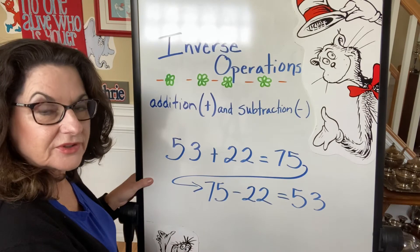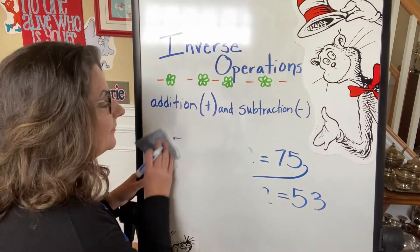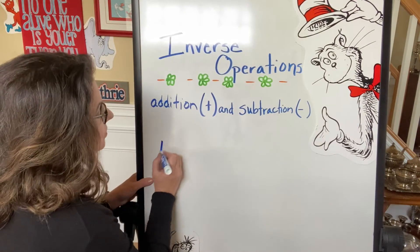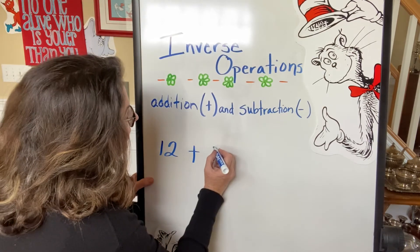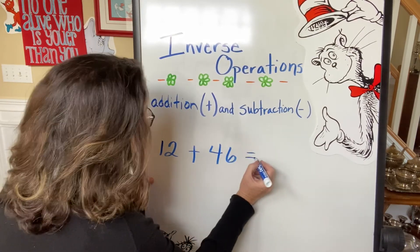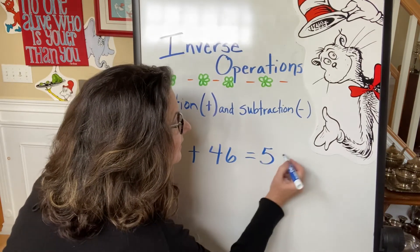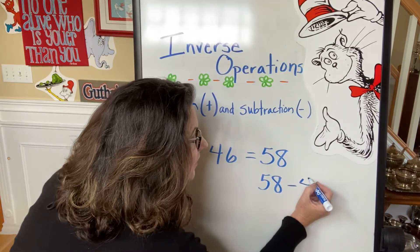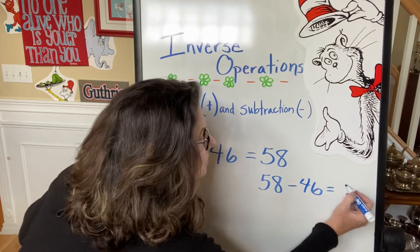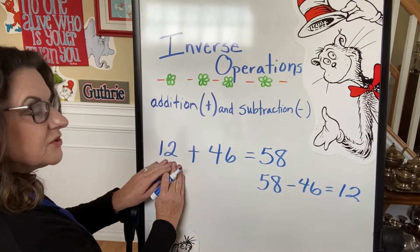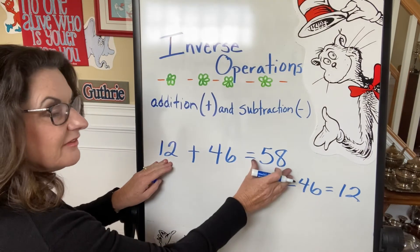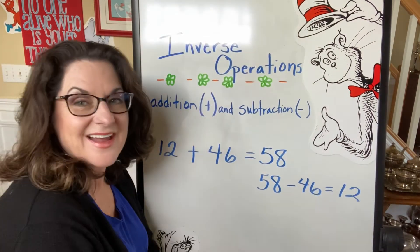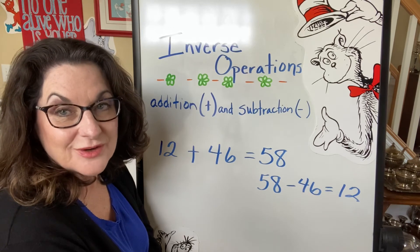This is another nice way to write it too. If I said 12 plus 46 equals 58, then I could put 58 underneath it, minus 46, equals 12. So, if I started with 12 and I added 46, I got 58. Then, if I take that 58 and take away that 46 that I added, I'm going to be right back at 12. And that's how we do inverse operations.